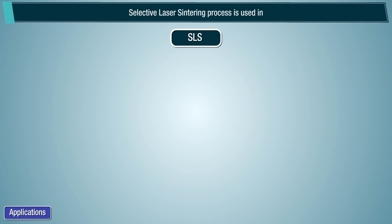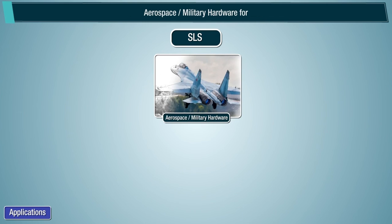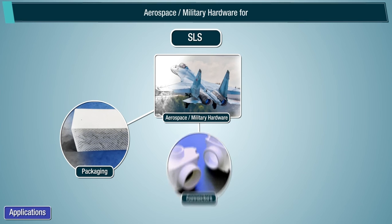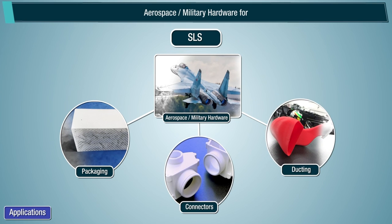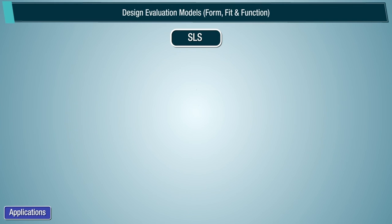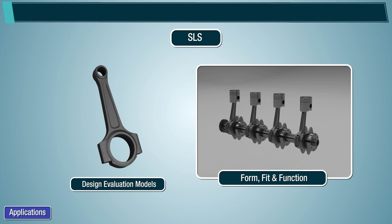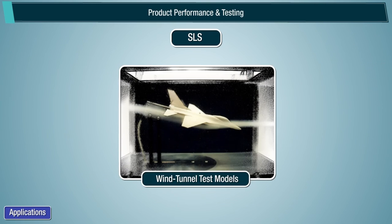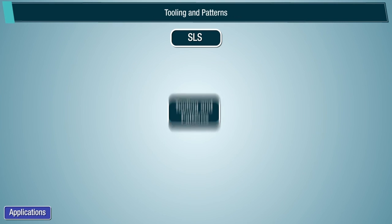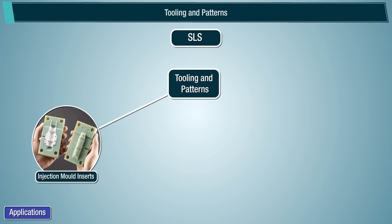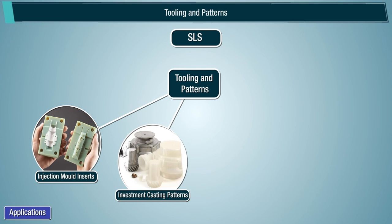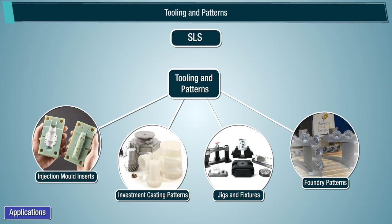The Selective Laser Sintering (SLS) process is used in aerospace and military hardware applications, including packaging, connectors, ducting, design evolution models for form, fit, and function, product performance and testing, and tooling and patterns such as injection mold inserts, investment casting patterns, jigs and fixtures, and foundry patterns.